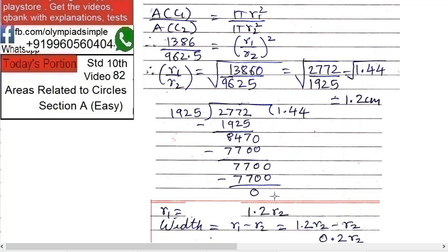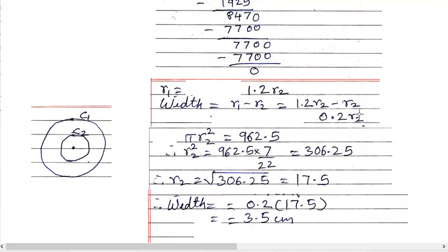Now how did I get this? You have to go on dividing by 5, then whatever you get. So it becomes 1.44. It's easily possible by Vedic mathematics. Now square root of 1.44 is easy: 1.2.